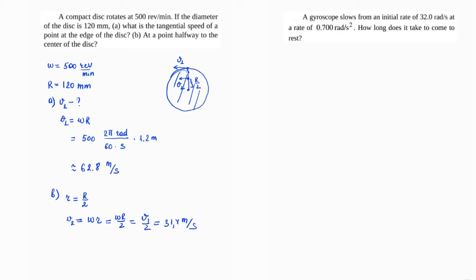The next problem: a gyroscope slows from an initial rate of 32 radians per second at a rate of 0.7 radians per second squared. How long does it take to come to rest? Initial angular velocity omega₀ equals 32 rad/s, angular acceleration alpha equals 0.7 rad/s².